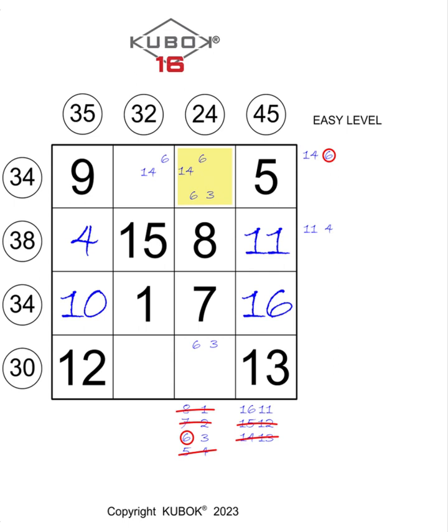But we note immediately that between the two numbers 3 and 6, the number 3 must be excluded, as to obtain the sum of 20, the 3 should be added to 17. But this is not possible because the numbers to be inserted must be between 1 and 16.